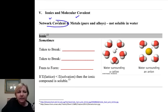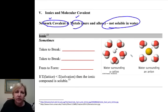Network covalent and metals are not soluble at all in water, so we're not going to focus on their solubility. But we will focus on ionic covalence along with the gaseous covalence. Now, let's start with ionics.